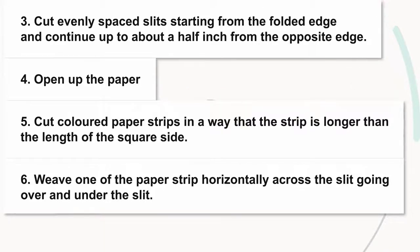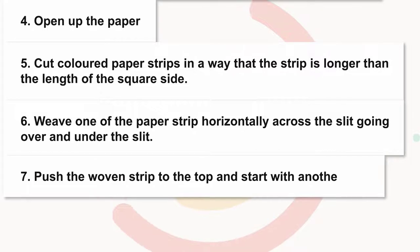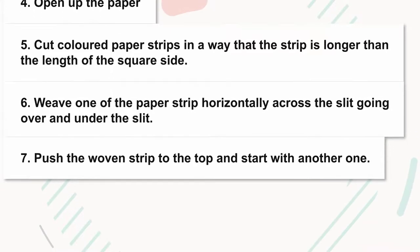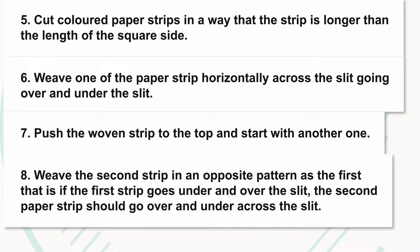Step seven: push the woven strip to the top and start with another one. Step eight: weave the second strip in an opposite pattern as the first — that is, if the first strip goes under and over the slits,